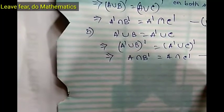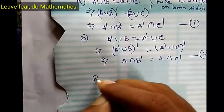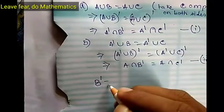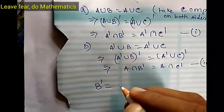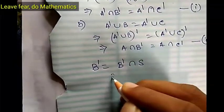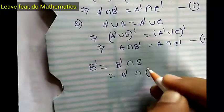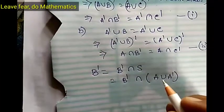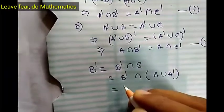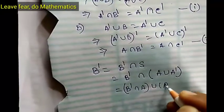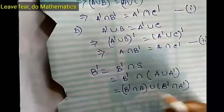We have to prove that B equals C. We start from B complement. We can write B complement equals B complement intersection S, where S is the universal set. Write S as A union A complement. Then by distributivity, we have (B complement intersection A) union (B complement intersection A complement). This is by distributive law.